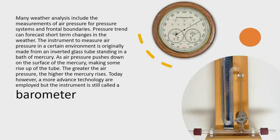Many weather analyses include the measurement of air pressure for pressure systems and frontal boundaries. Pressure trends can forecast short-term changes in the weather. The instrument to measure air pressure in a certain environment is originally made from an inverted glass tube standing in a bath of mercury.